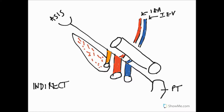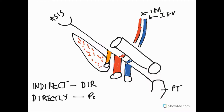The peritoneal sac enters the inguinal canal either indirectly — through the deep inguinal ring — or directly, which is through the posterior wall of the inguinal canal, directly through a weakened area in the abdominal musculature. The posterior wall of the inguinal canal is the transversalis fascia, so the peritoneal sac would pass through a weakened area of that transversalis fascia.